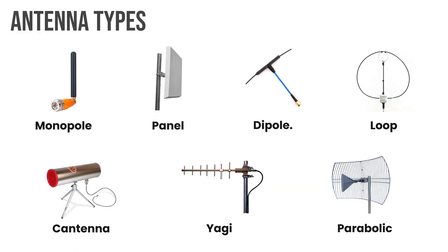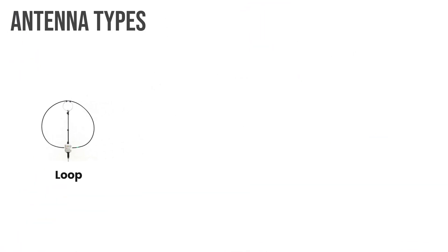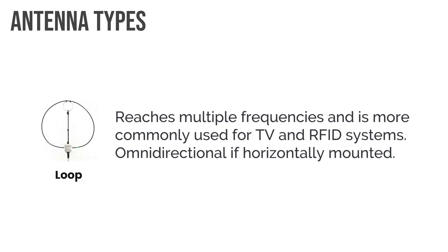Antenna types may come up on the exam. The main thing is to understand which are omnidirectional and which are directional. A loop antenna is omnidirectional if laid horizontally — it picks up signals from all directions. If vertical, it works in a specific space. A monopole is an omnidirectional antenna that sends and receives signals in all directions perpendicular to the line of the antenna itself. A dipole is essentially two monopoles together — omnidirectional, but it can generate a powerful signal in a restricted space.